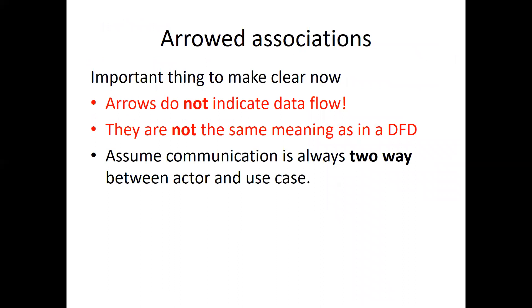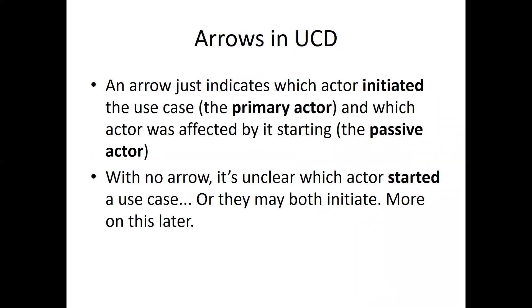Arrow associations — important: arrows do not indicate data flow. They don't have the same meaning as a DFD (data flow diagram). Assume communication is always two ways between the actor and the use case. An arrow just indicates which actor initiates. A line is one thing, and a line with an arrowhead is another. If you have an arrowhead, that particular actor is initiating the use case — we call this the primary actor. The affected actor is the passive actor. With no arrow, it's unclear which actor started the use case, or they may both initiate it.